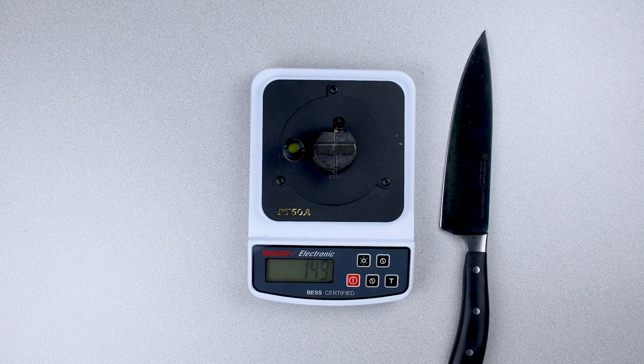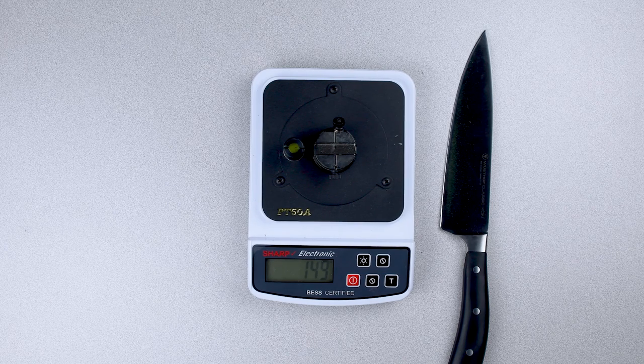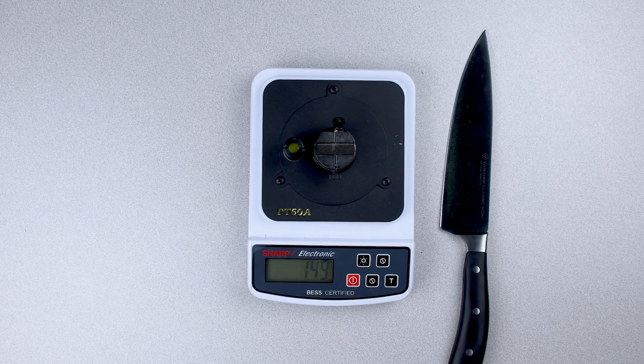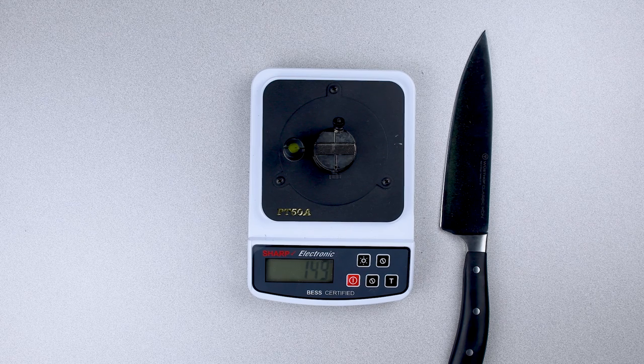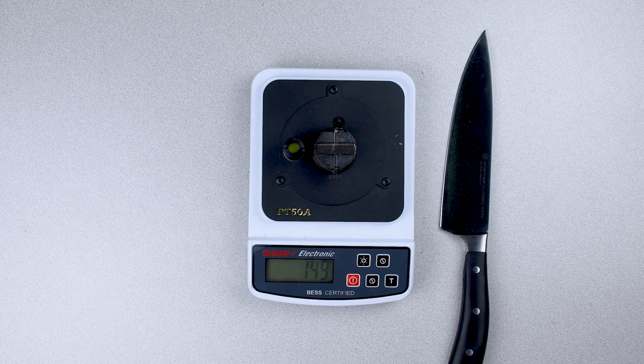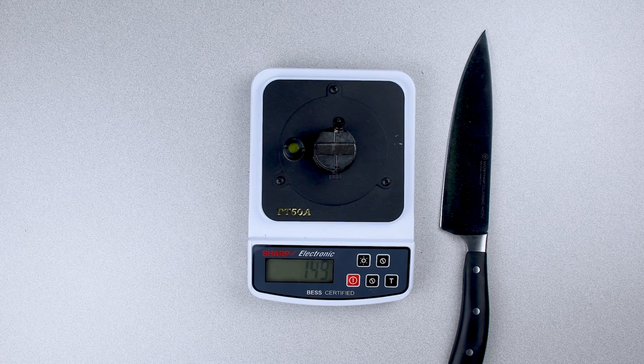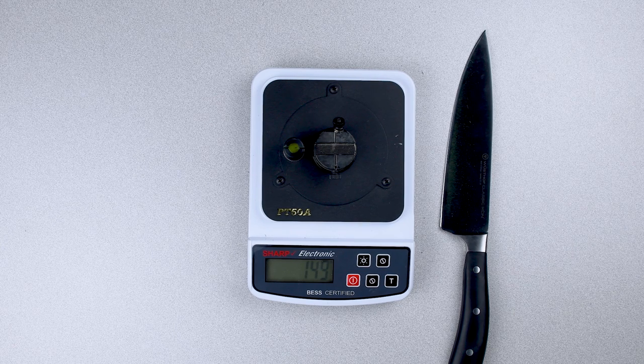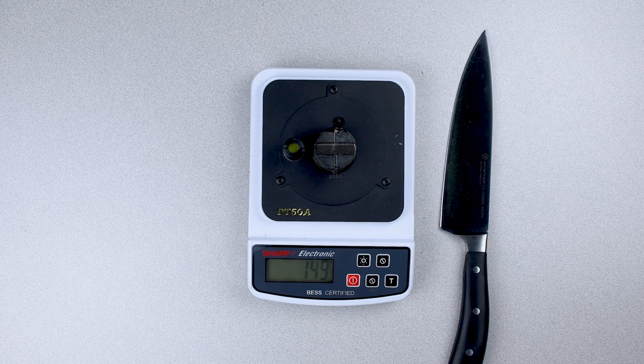So a minute of stropping did quite a bit to improve those small sections of damage. The average including a damaged spot was 293 after stropping. If we don't include the damaged areas, if we try to avoid those, then the average sharpness was 146—basically the same as how it arrived.